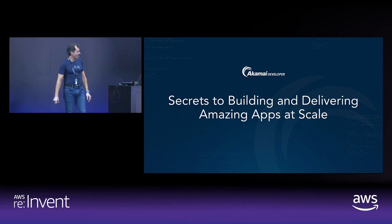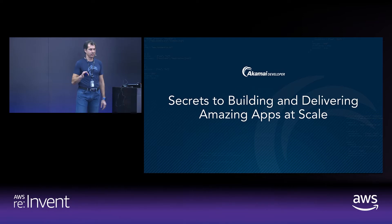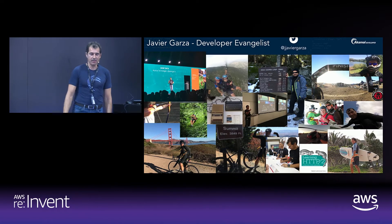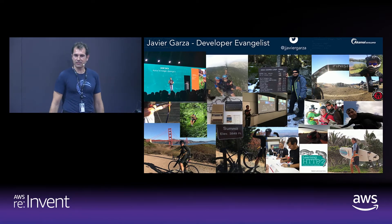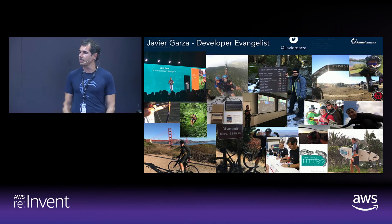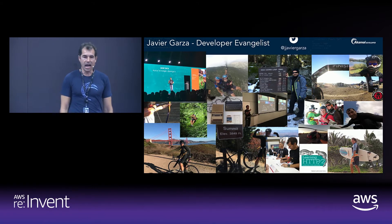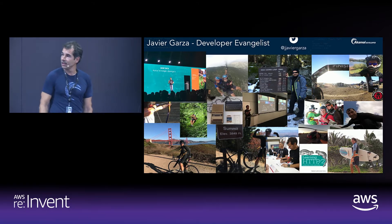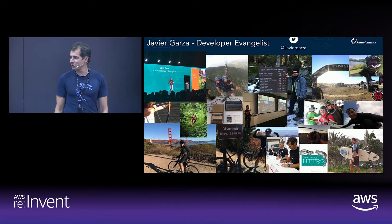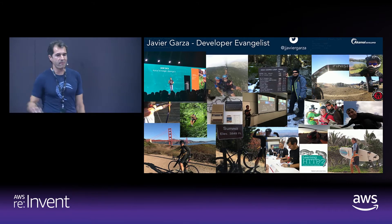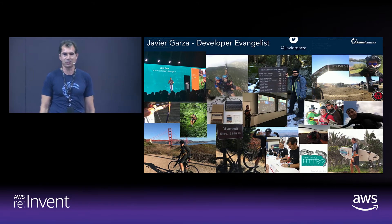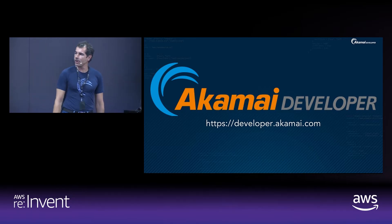Welcome everybody. Today we are going to cover the secrets to building and delivering amazing apps at scale. My name is Javier Gartha. For the past 15 years I've been working with some of the largest companies worldwide to help them optimize their apps and websites for speed. I'm a geek who likes to share the things I learn, cares for the environment and loves to do sports and adventure. I work as a developer evangelist in the Akamai developer relations team.